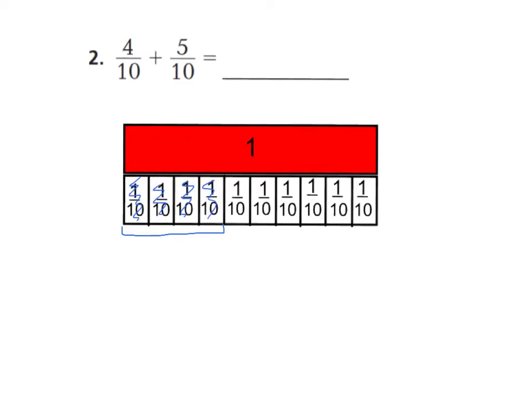let's go ahead and shade in 4 tenths. And then, I'm going to add 5 tenths to that. So let's block off 5 tenths. So now let me go ahead and shade in my 1 tenths, 2 tenths, 3 tenths, 4 tenths, and 5 tenths. So now all I need to do is count up how many tenths I have. 1 tenths, 2 tenths, 3 tenths, 4 tenths, 5 tenths, 6 tenths, 7 tenths, 8 tenths, and 9 tenths. So, 4 tenths plus 5 tenths equals 9 tenths. And I can see that it is almost equal to a whole, but not quite. We have still 1 tenth left over.